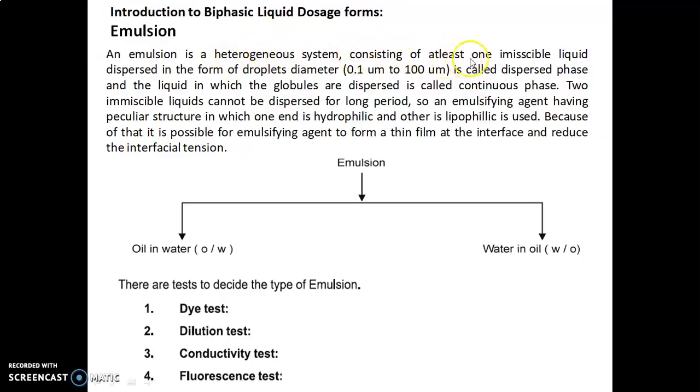An emulsion is a heterogeneous system consisting of at least one immiscible liquid dispersed in the form of droplets, diameter 0.1 to 100 micrometers, called dispersed phase. The liquid in which the globules are dispersed is called continuous phase. Two immiscible liquids cannot be dispersed for long periods, so an emulsifying agent having a peculiar structure with one hydrophilic end and one lipophilic end is used to form a thin film at the interface and reduce interfacial tension.